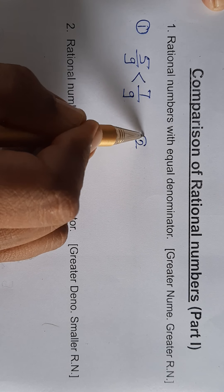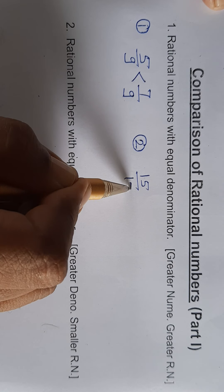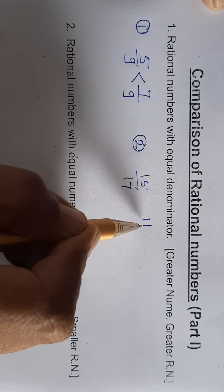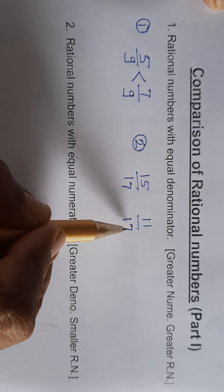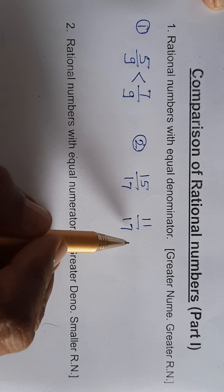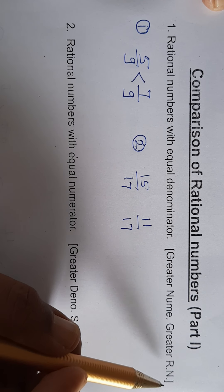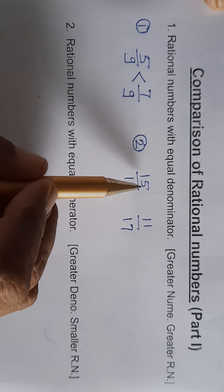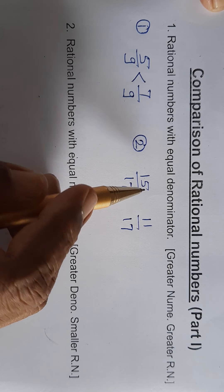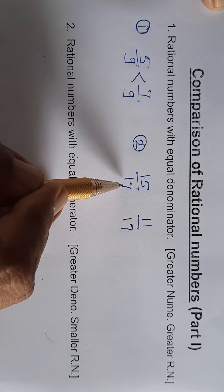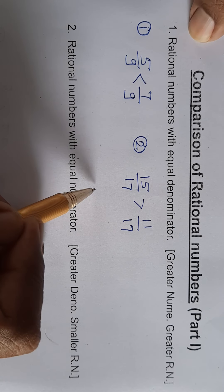Second example: 15 upon 17 and 11 upon 17. The denominators are equal, so the greater numerator is the greater rational number. Here, 15 is greater than 11. Therefore, 15 upon 17 is the greater rational number.